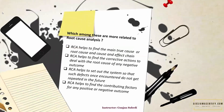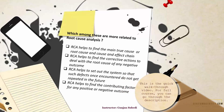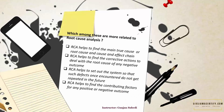Which among these are more related to root cause analysis? The options are: root cause analysis helps to find the main true cause or the root cause and the cause and effect change; root cause analysis helps to find the corrective actions to deal with the root causes of any negative outcome; root cause analysis helps to set out the system so that such defects once encountered do not get repeated in the future; and root cause analysis helps to find the contributing factors for any positive or negative outcome.